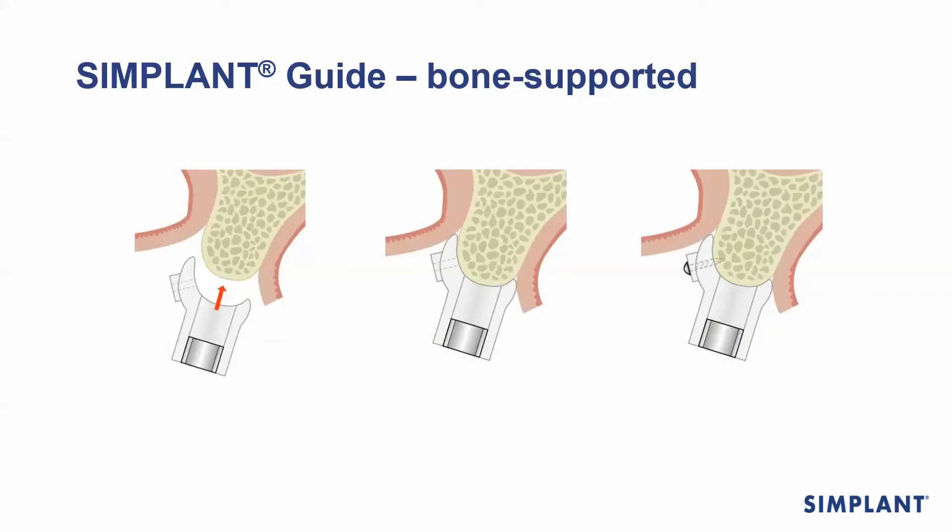Our first guide option would be our bone supported stent. For this procedure you would need to open up your flaps, seat the stent directly onto the bone, and use a fixation screw to fixate the stent in position.